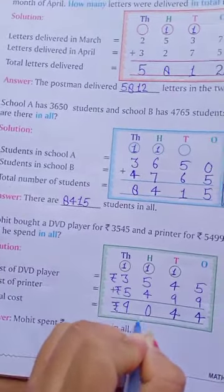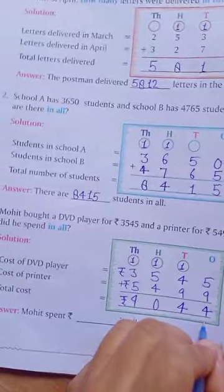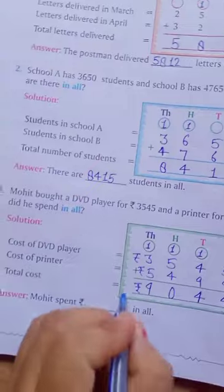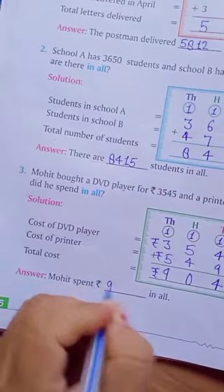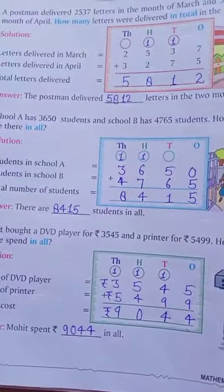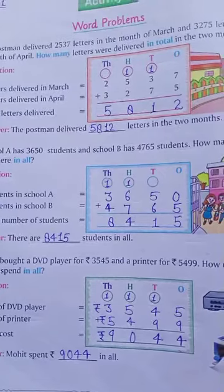Okay. So, 9044 is total cost. So, in answer write here, Mohit spend rupees, rupees is given so 9,044. This much money total he spent. Okay. Now, student, watch your next video.